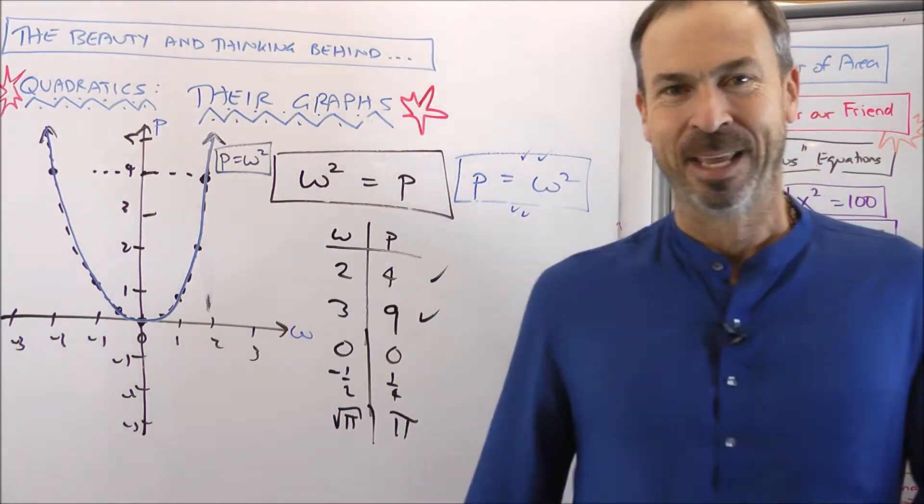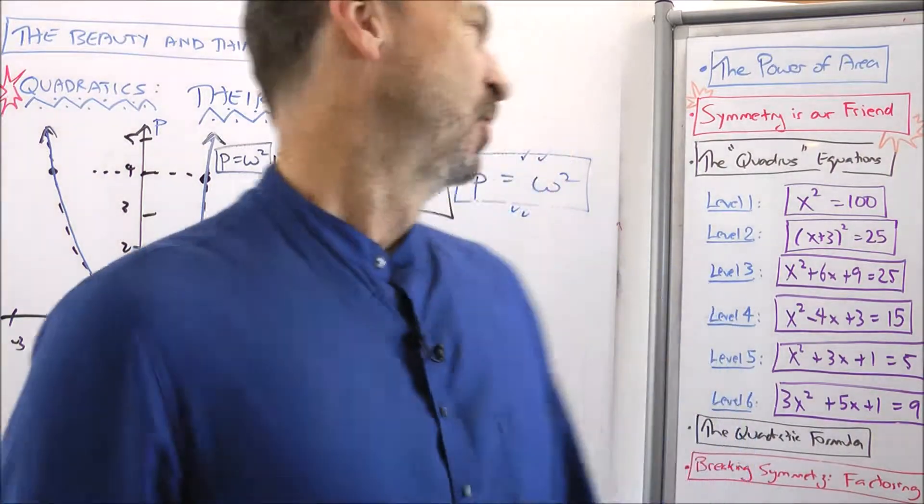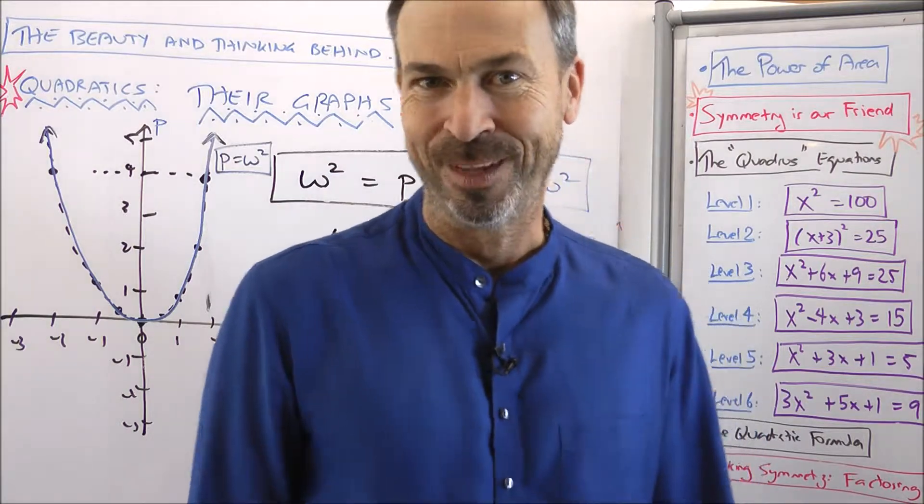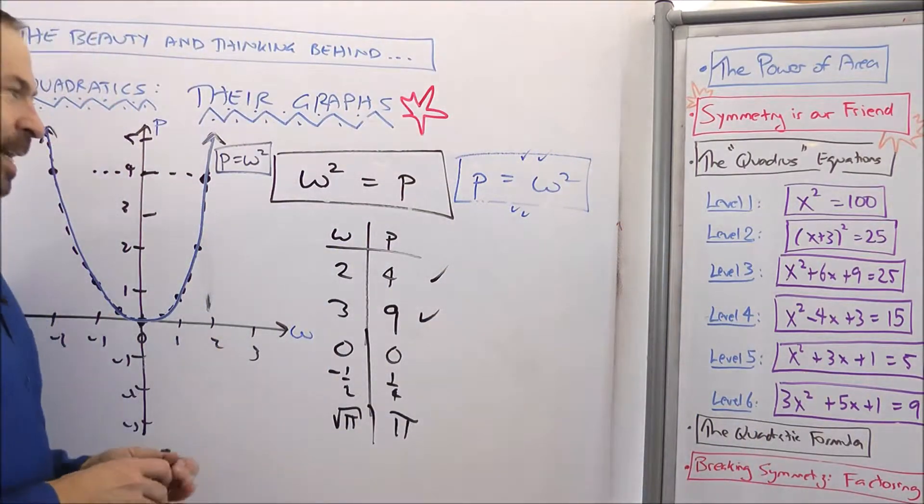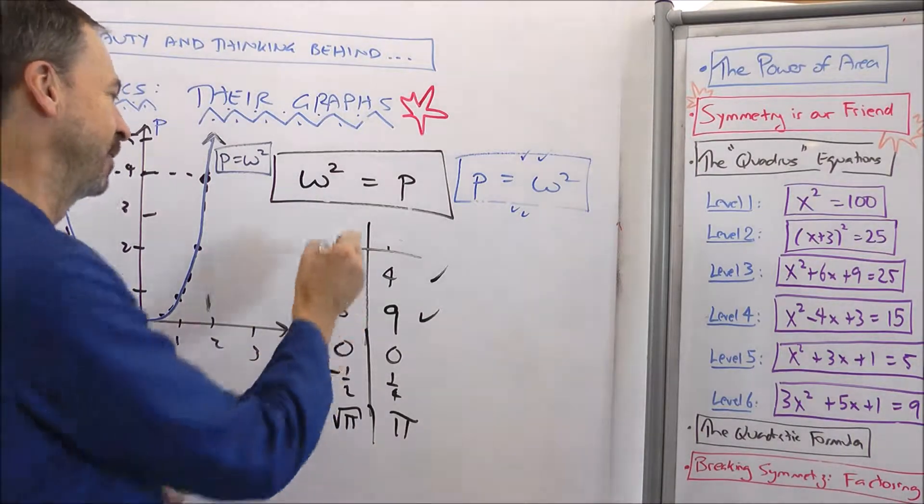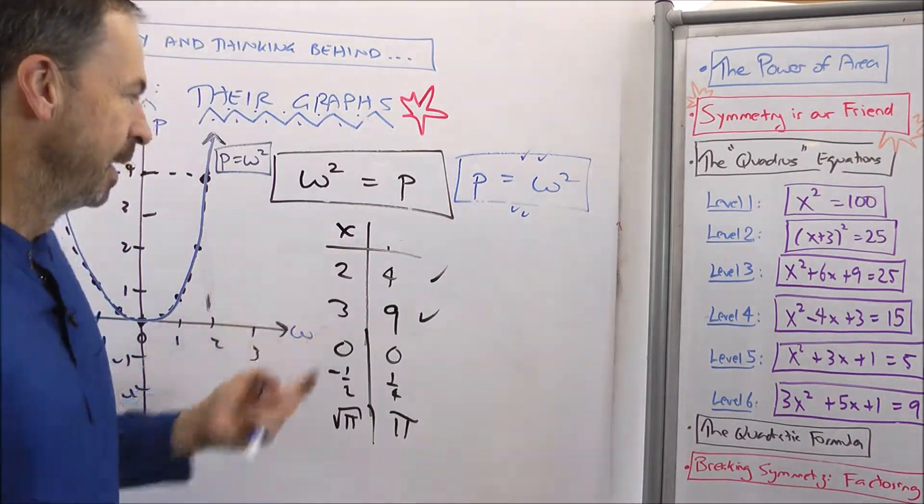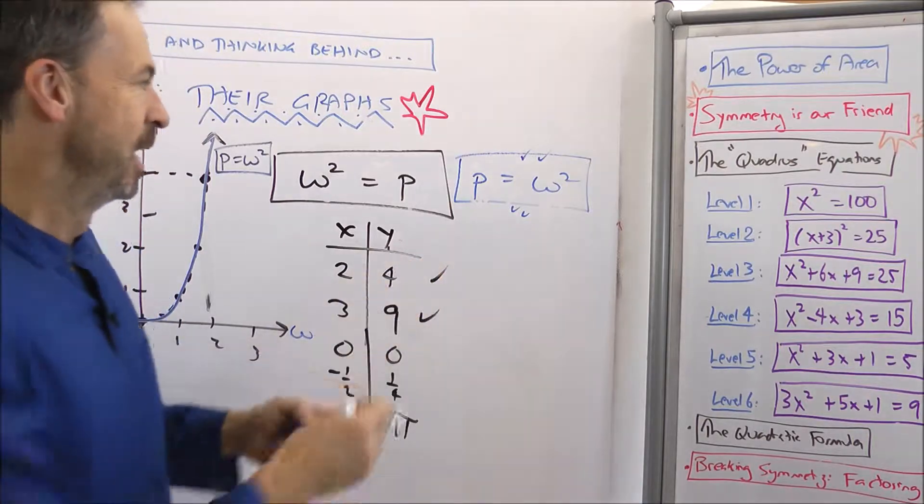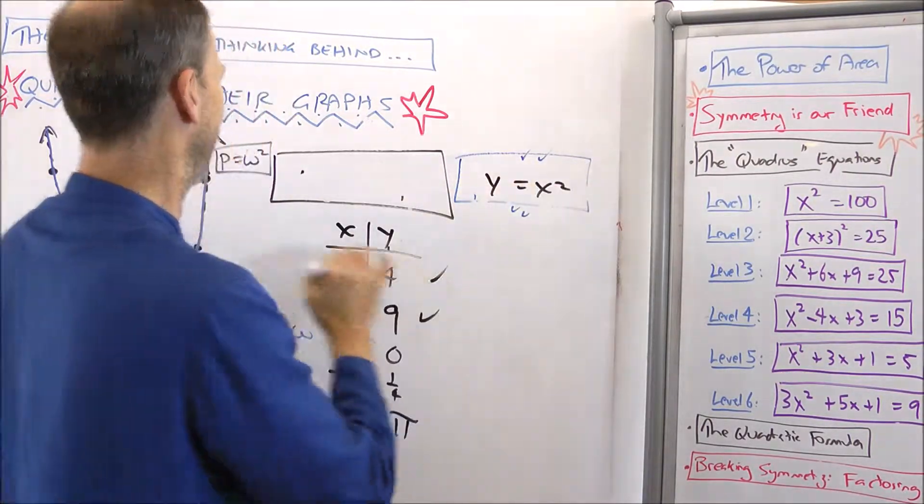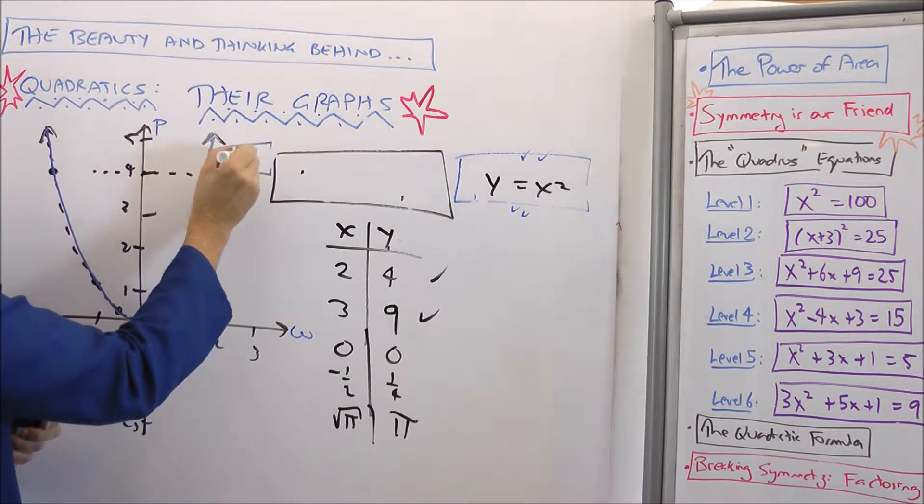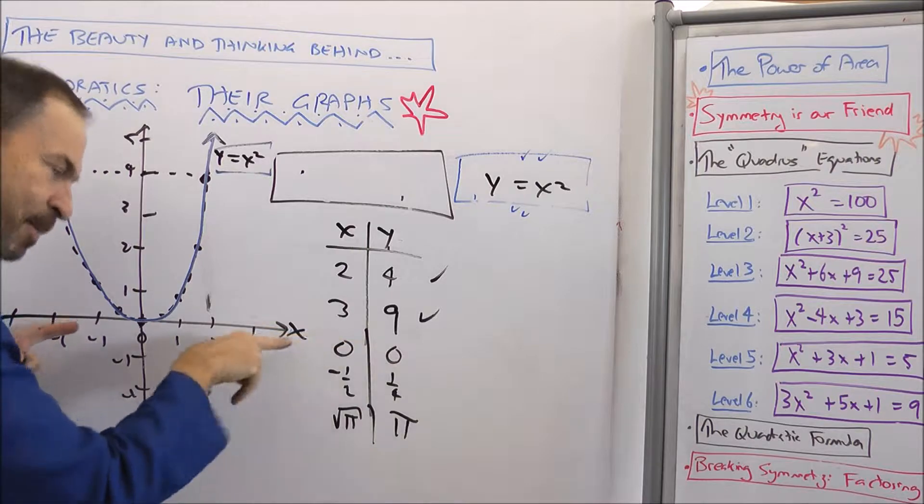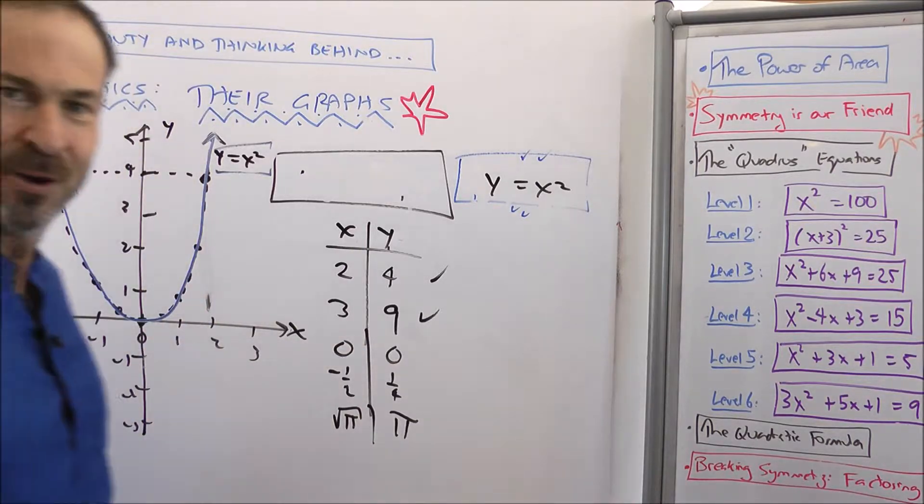Now you're probably on to me. People in high school don't like weird letters like P and W. Everyone's obsessed with letters X and Y. So what I've really done here is I said, let's call the independent variable X because everyone seems to want to do that in high school. Let's call the dependent variable Y because everyone seems to want to do that in high school. In which case what I've really got here is the equation Y equals X squared.